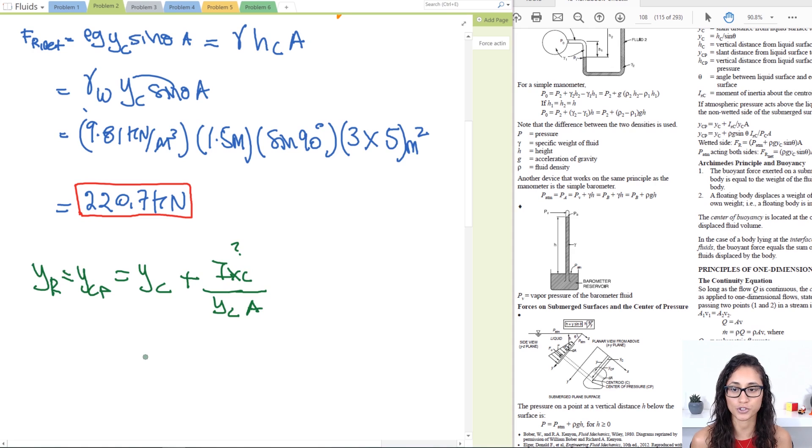So we have yc and we have the area. All we need to calculate is the moment of inertia. Now if you remember from statics, the moment of inertia of a square or rectangle is equal to bh cubed over 12. So ixc is equal to bh cubed over 12. So b here is 5 meters, now our h is 3 meters cubed, and you divide that by 12. So if you plug in this, you will get an answer of 11.25 meters to the fourth.